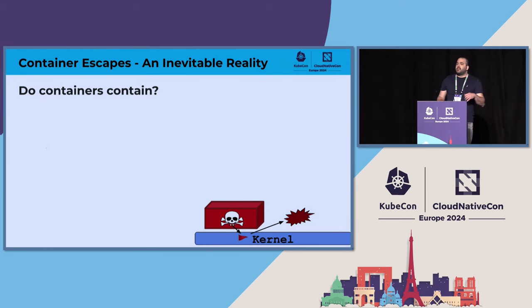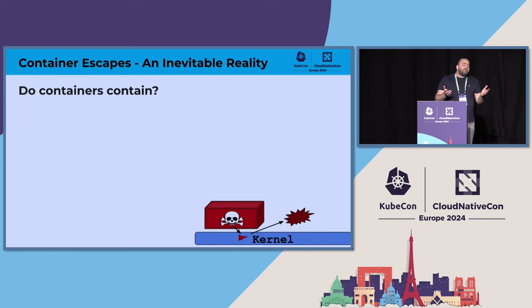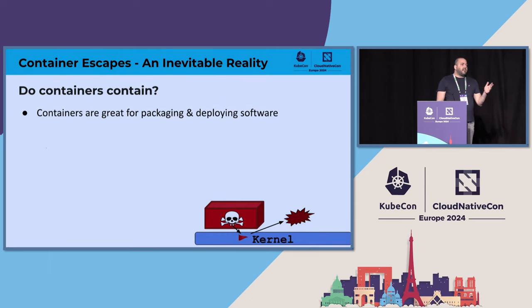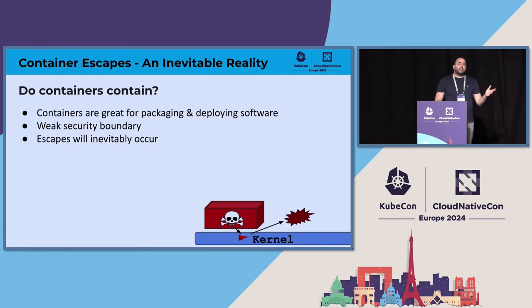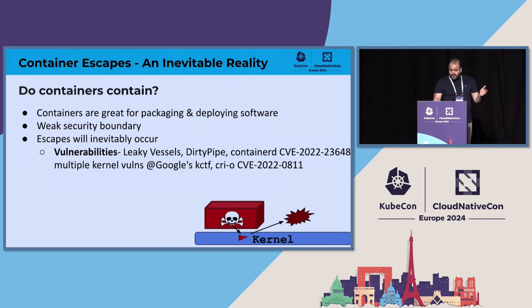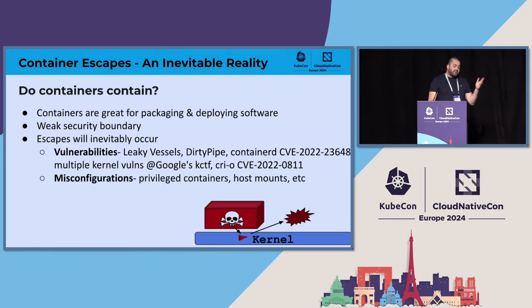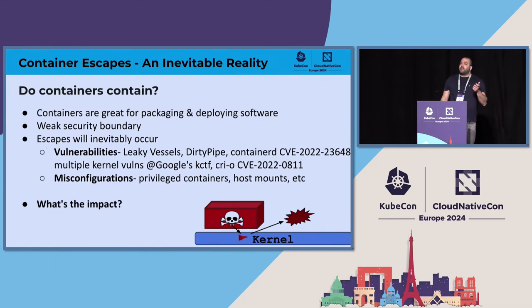Ever since containers came into our life, we've been hearing more and more about container escape. The question we need to ask ourselves is: do containers actually contain? There's no doubt that containers are great for packaging and deploying software — that's why we all use them. But they have weak security boundaries, mostly because of the shared kernel. Container escape will probably continue to happen, whether because of vulnerabilities or misconfigurations. The most known example is a privileged container with access to the host. So we must understand the impact.